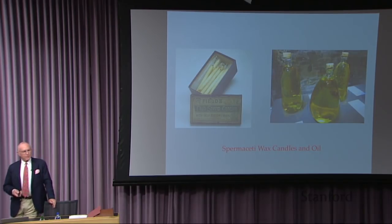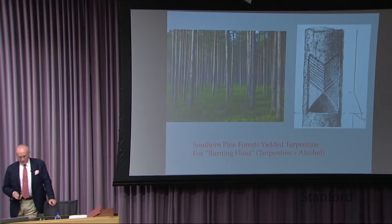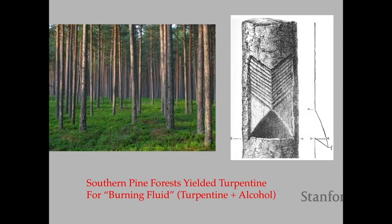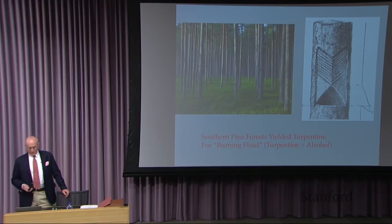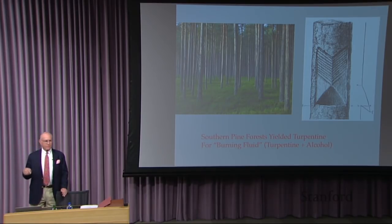Whale oil candles were really the exclusive property of the wealthier population. The more common source of light was something called burning fluid, made with turpentine drawn from the vast pine forests of the southeastern United States. The turpentine was drained from the tree in a process somewhat like maple sap — a liquid bandage drawn into natural pockets carved into the tree — though it only took about three years to destroy the tree using this system. Burning fluid was made by mixing turpentine with grain alcohol and a little menthol to improve the smell, and it was much cheaper.